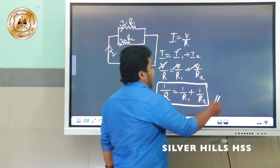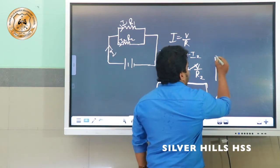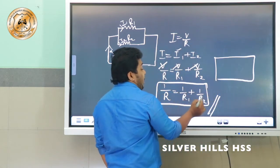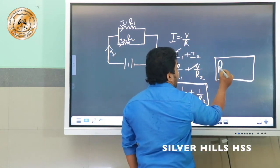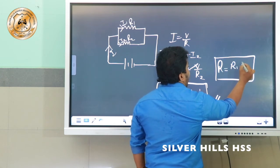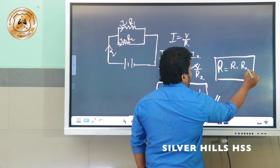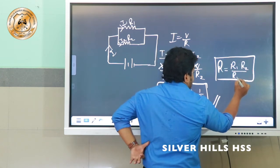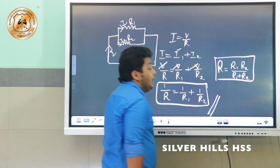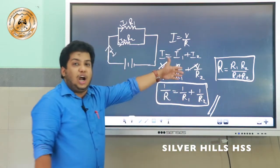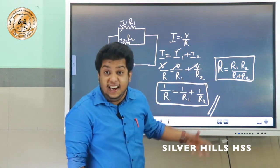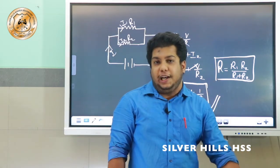There is a shortcut. When we cross-multiply this equation, we obtain effective resistance R is equal to R1 multiplied by R2, divided by R1 plus R2. This is the shortcut to find the effective resistance in parallel combination.